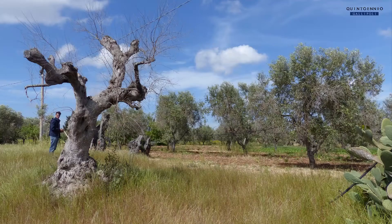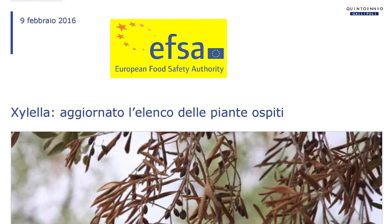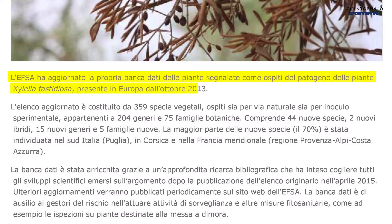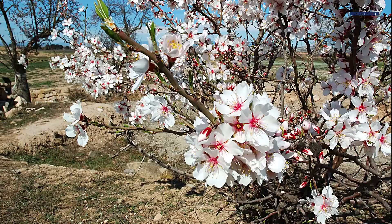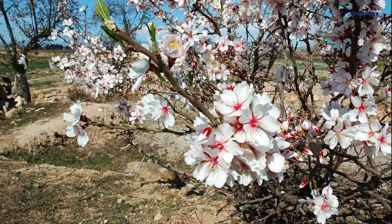But the problem doesn't concern only olive trees. EFSA has produced a long list of plant species that can be hosts of the subspecies of Xylella found in Salento, including cherry and almond trees, which are just as important as olives to agriculture in Apulia and bordering regions. So we have a serious emergency!